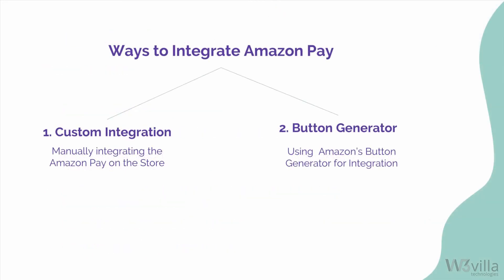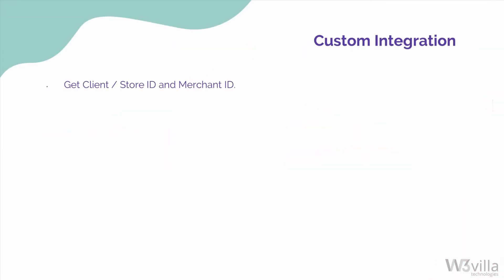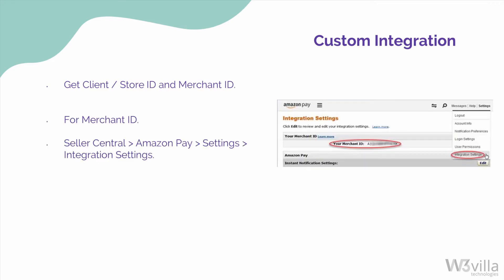There are two ways in which you can integrate Amazon Pay in your store: one, custom integration; two, using Amazon's Button Generator. For custom integration, you need to save the Client / Store ID that was generated when registering for Amazon Pay. The next step is to get the merchant ID. To get your merchant ID, go to Seller Central, choose Amazon Pay, then go to Settings and click on Integration Settings. Here you can see the merchant ID, which is used as the seller ID parameter in the request.